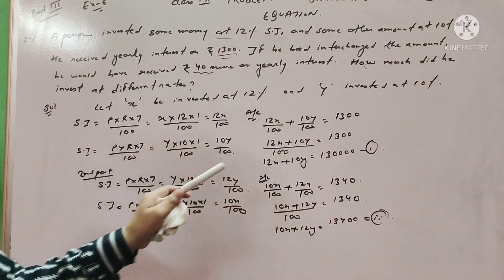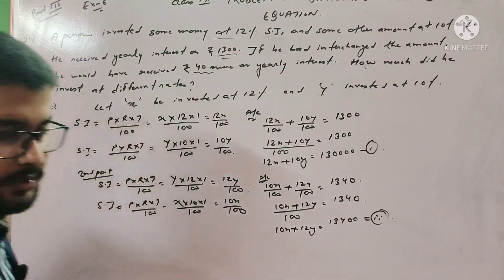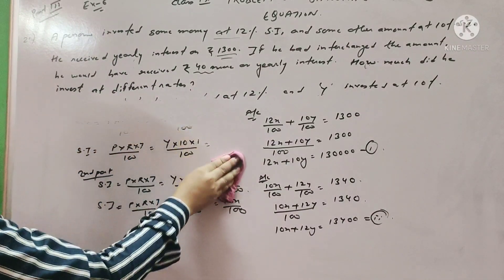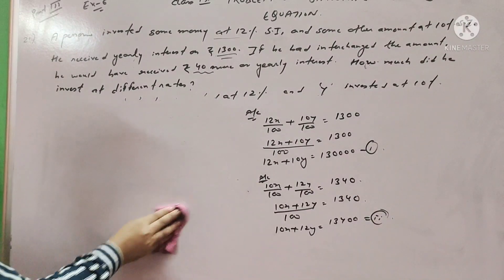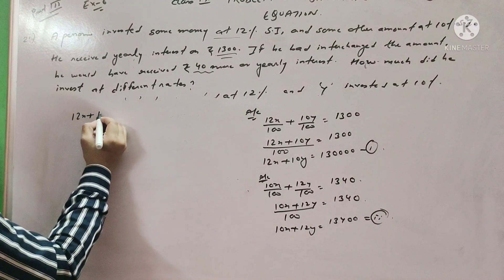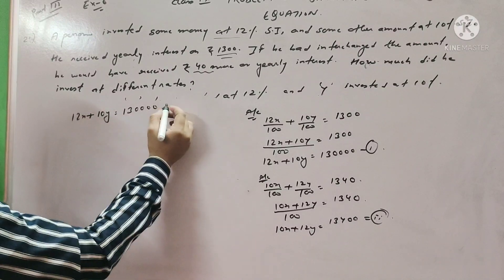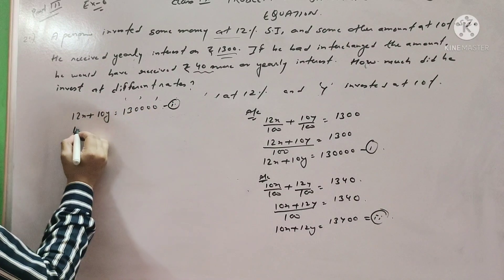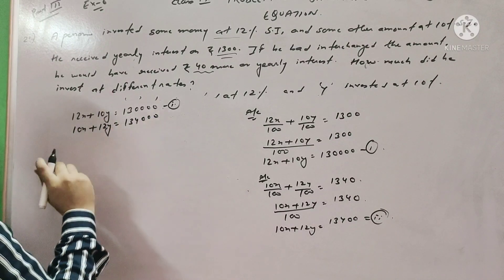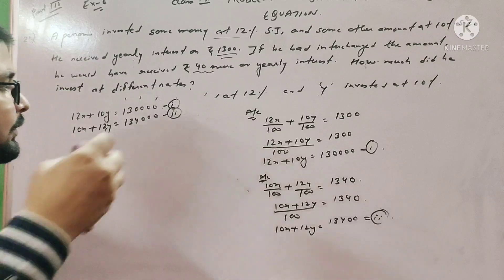Now we have our two equations. Equation 1: 12X plus 10Y equals 13000. Equation 2: 10X plus 12Y equals 134000. We write down both equations and prepare to solve them using the elimination method.